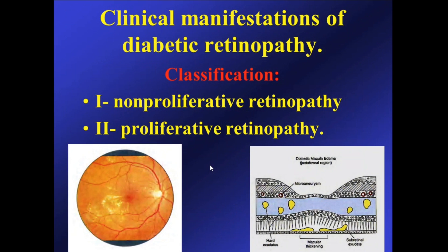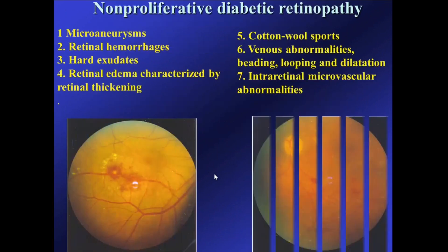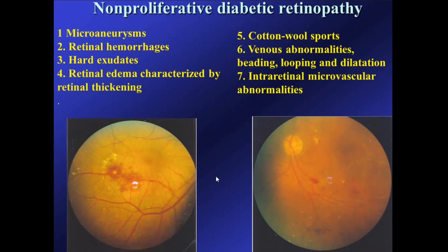Now we should speak about the clinical manifestation and classification of diabetic retinopathy. We have two stages: non-proliferative and proliferative diabetic retinopathy. Non-proliferative diabetic retinopathy is characterized by microaneurysms, retinal hemorrhages, hard exudates, retinal edema, cotton wool spots, venous abnormalities including beading and dilatation, and intraretinal microvascular anomalies.